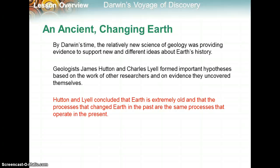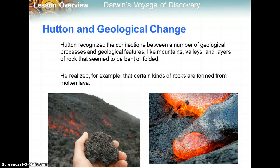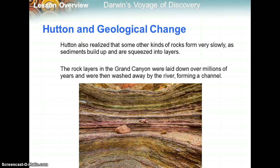Moving into section 16.2 — ideas that helped shape Darwin's thinking. By Darwin's time, the relatively new science of geology was providing evidence to support new ideas about Earth's history. Geologists James Hutton and Charles Lyell formed important hypotheses based on evidence they uncovered themselves. Hutton recognized connections between geological processes and features like mountains, valleys, and layers of rocks that appeared bent or folded. He realized that certain rocks form from molten lava from volcanic activity, while others form very slowly as sediments build up and are squeezed into layers.